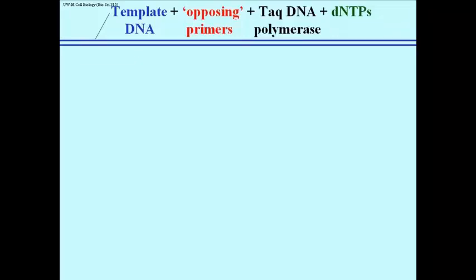So here we have the two strands of our template DNA. We're going to add the opposing primers, Taq polymerase, and the four deoxynucleotide triphosphates all at once in a single tube containing the template DNA.